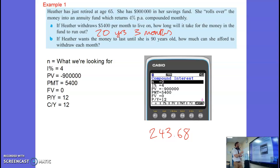Part B then. If Heather wants the money to last until she is 90 years old, how much can she afford to withdraw each month? So we're ignoring this now. So that is what we are trying to work out. That's what we are looking for.